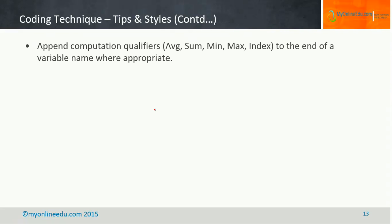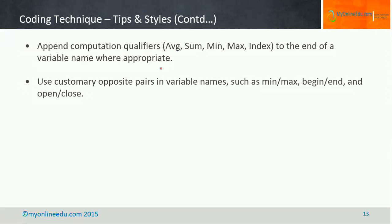A good suggestion is to append computation qualifiers to the end of variable names where appropriate — for example: AVG for average, SUM for summation, MIN for minimum, MAX for maximum. Also, use customary opposite pairs in variable names such as min/max. If a program uses both minimum and maximum values, name one variable with min and another with max so it is easy to understand. Similarly, use begin/end and open/close pairs, but always be consistent.